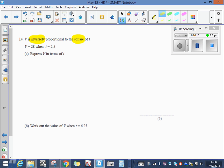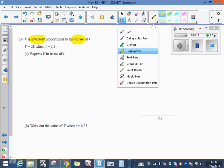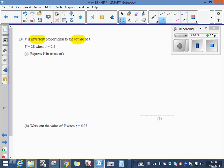It's inversely proportional to the square of t. Read it really carefully. So let's write that down. It means that V is proportional to, remember if it says inversely then it's one over the square of t, one over t squared.